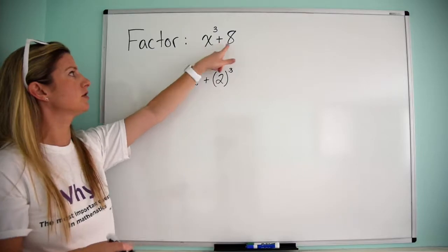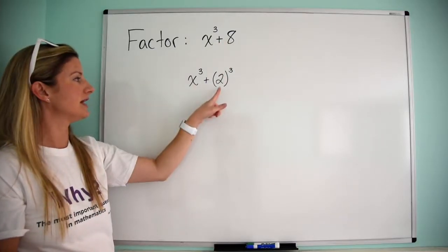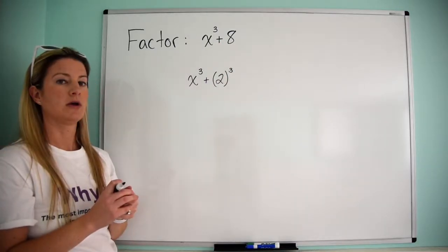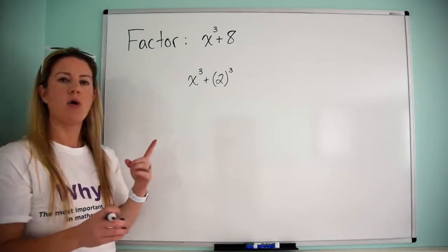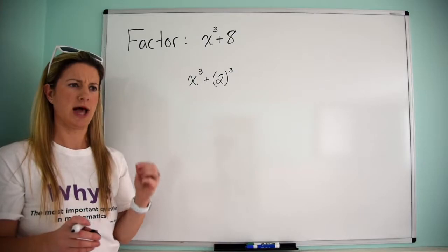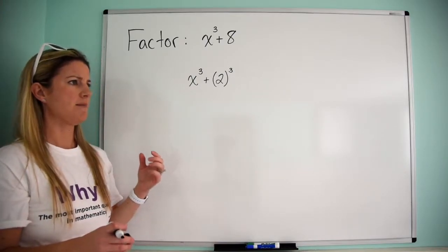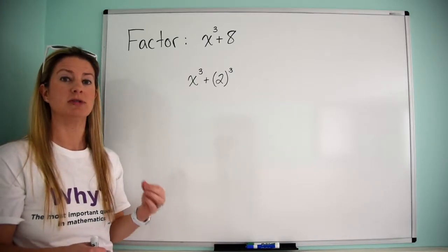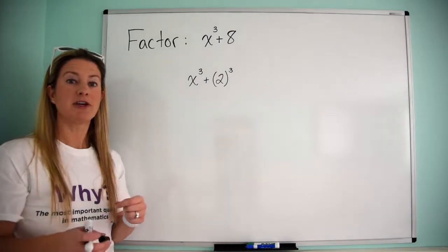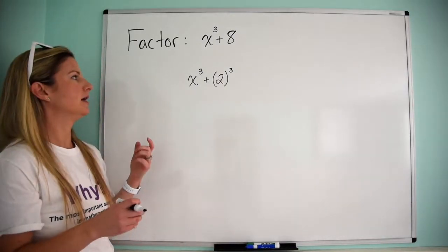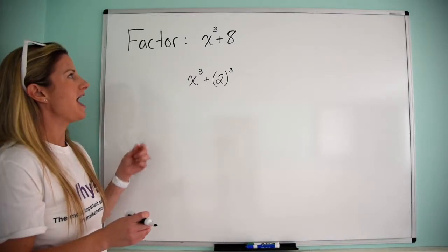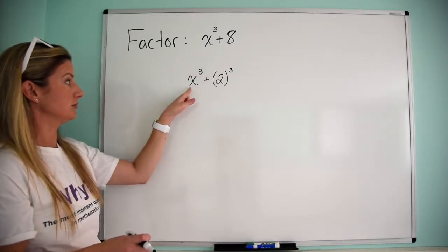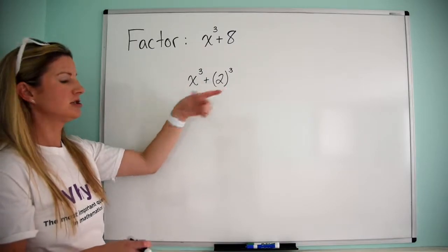I see x to the third plus 2 to the third. So, again, look for patterns. What do you see? This is raised to the third, x is raised to the third, and then 8, another way to write that is 2 to the third. So, then right now, what you might be saying is, oh my gosh, I remember in class, my teacher taught me about special patterns I can use to factor the sum of cubes and the difference of cubes. And this is clearly a sum of 2 cubes, x cubed plus 2 cubed.